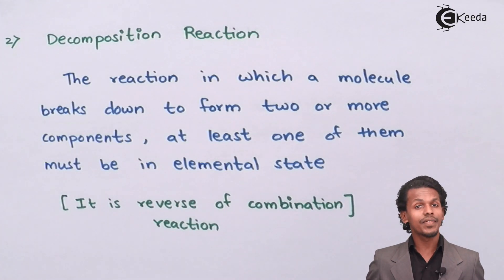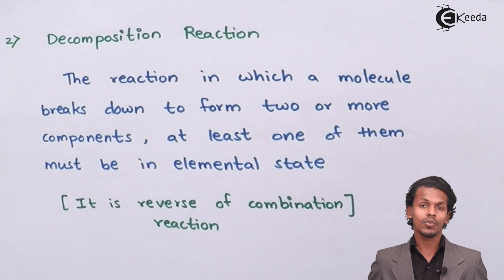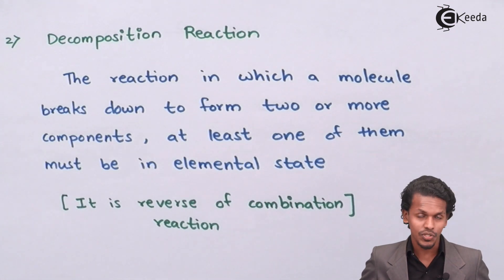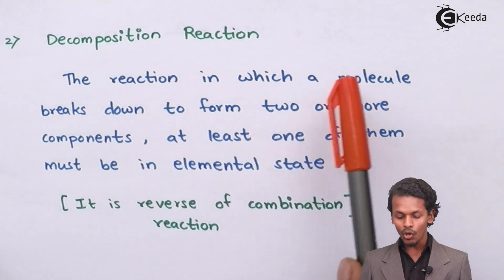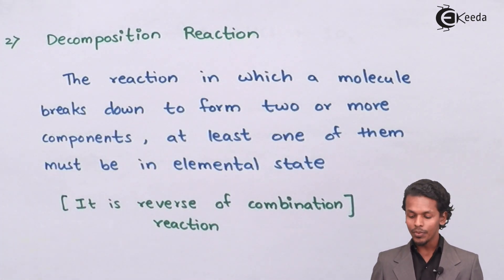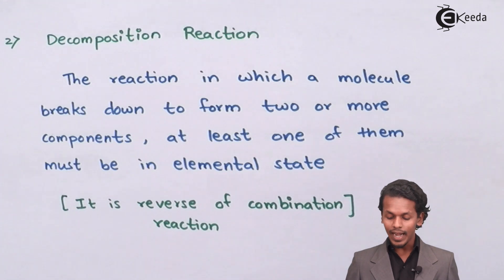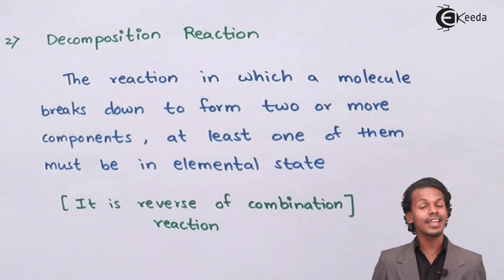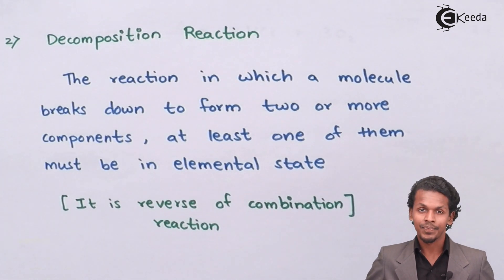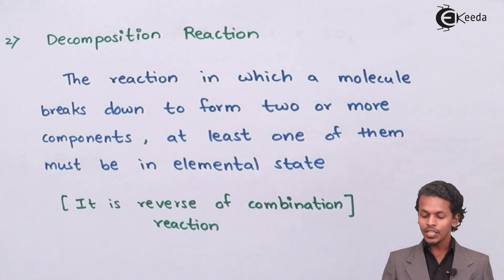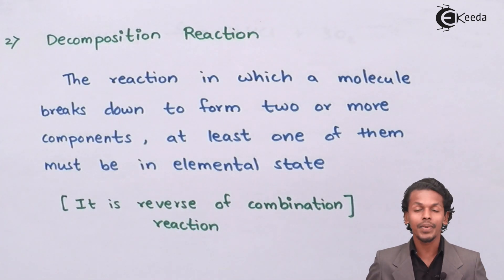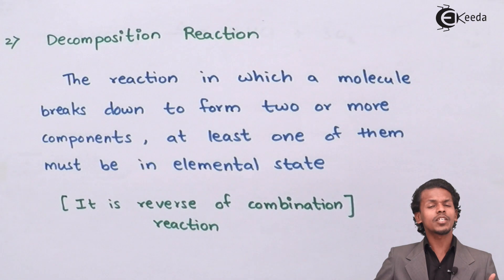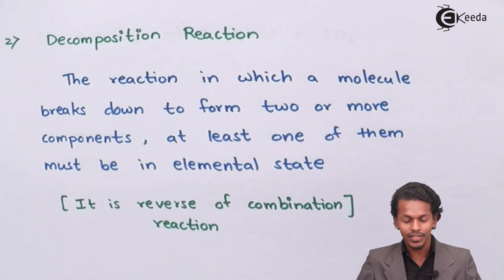Before understanding the meaning of decomposition reaction in a redox reaction, we should know what decomposition actually is. The definition is: a reaction in which a molecule breaks down to form two or more components, where at least one of them must be in elemental state. That kind of reaction is known as a decomposition reaction, and it is the reverse of the combination reaction we did previously. Let me explain with an example of a redox reaction.